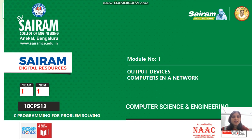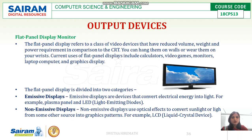Hello students, this is the seventh video of Chapter 1 of Module 1. In the last video I was discussing output devices, and I will continue on output devices in this video and also discuss computers in a network. Output devices consist of three different types: monitors, plotters, and printers. I was discussing monitors, and we have already covered CRT.